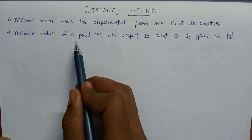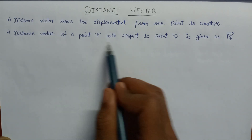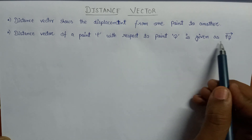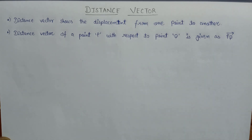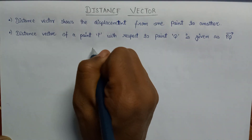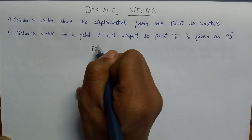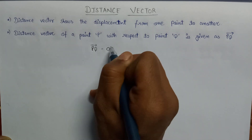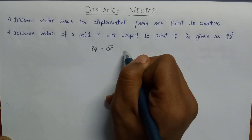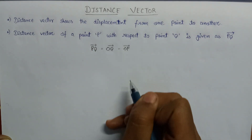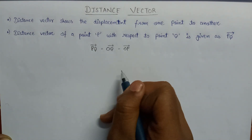Distance vector of a point P with respect to another point Q is given by PQ vector. If we talk about this PQ vector, then PQ vector will be equal to OQ vector minus OP vector. This is the representation of PQ vector.